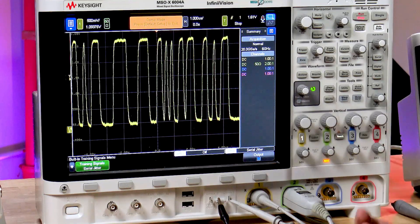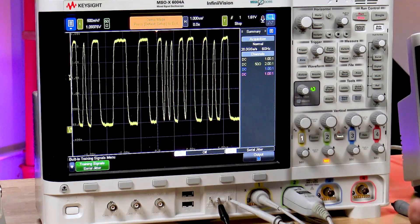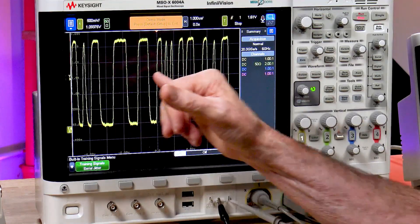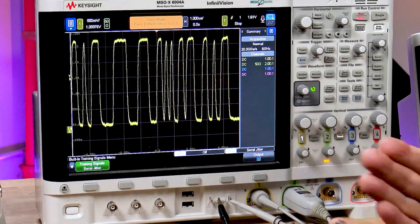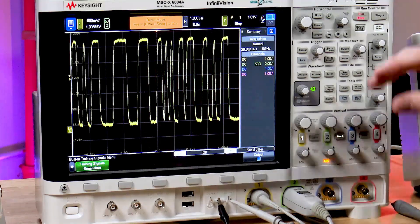So we can use the jitter analysis to recover a clock in software, then do a comparison of every edge, find out how much timing error there is in order to do jitter analysis.